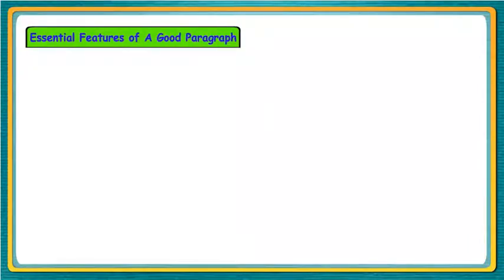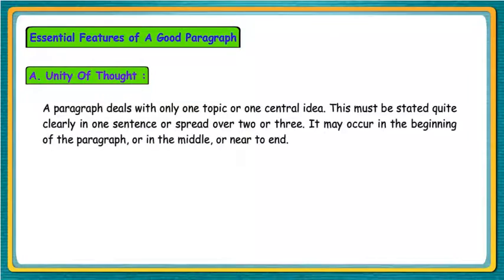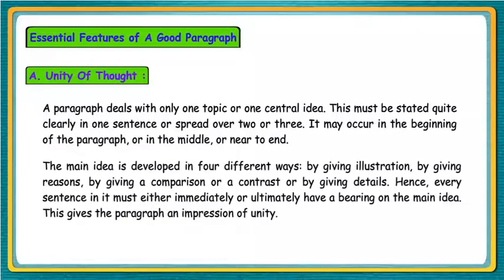Essential Features of a Good Paragraph. A. Unity of Thought. A paragraph deals with only one topic or one central idea. This must be stated quite clearly in one sentence or spread over two or three. It may occur in the beginning of the paragraph, or in the middle, or near to end.